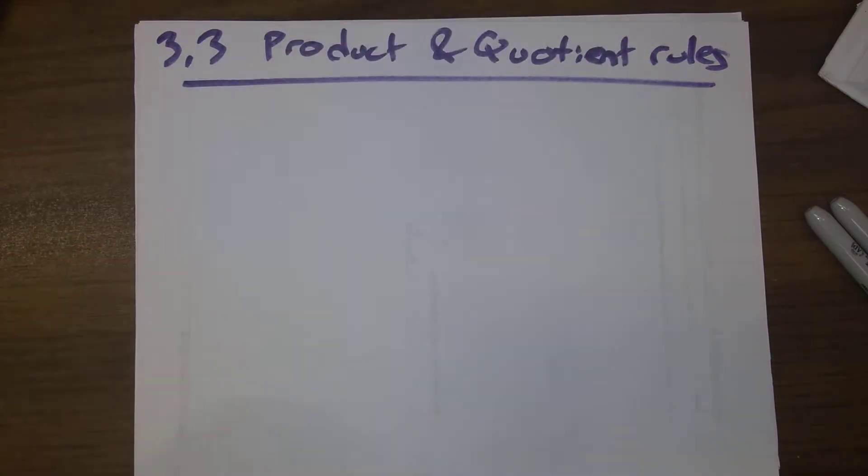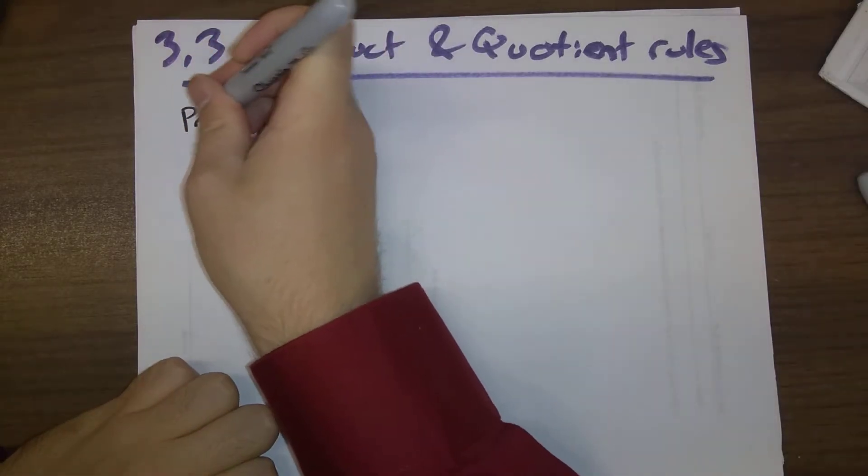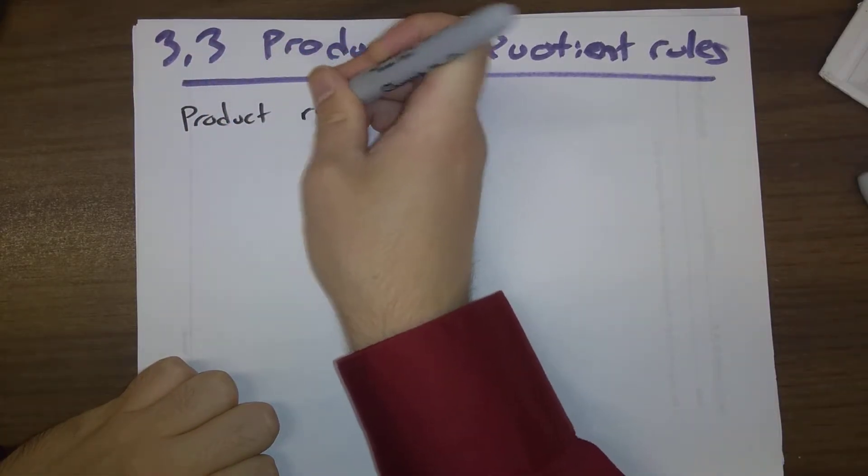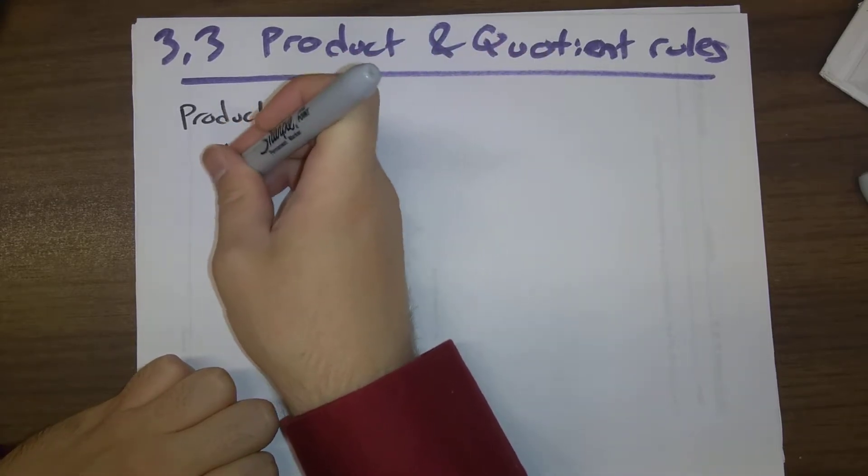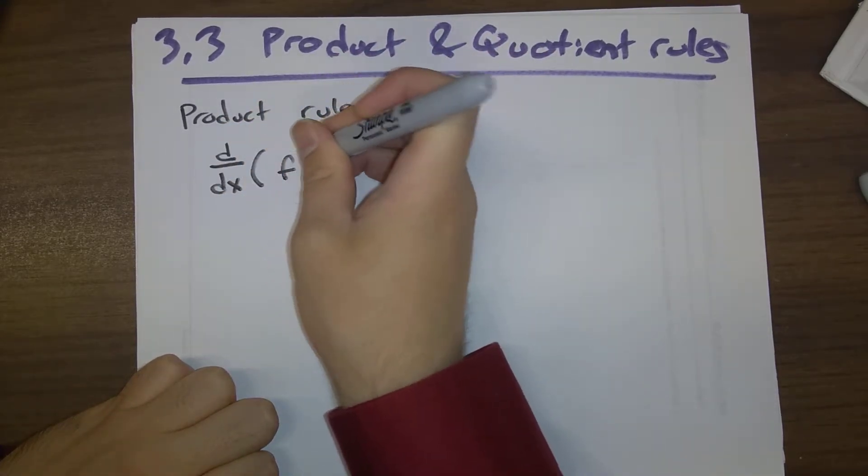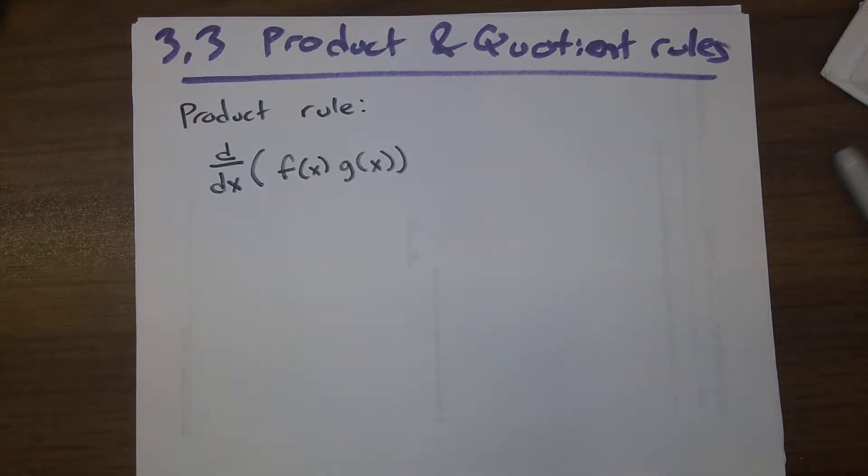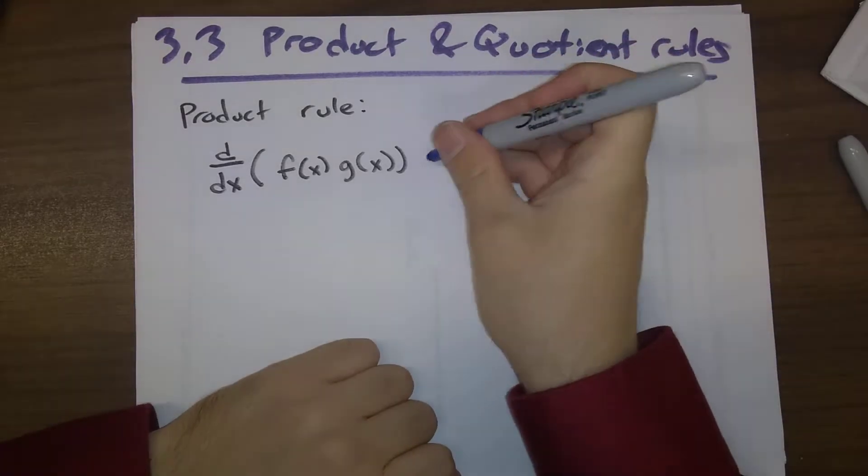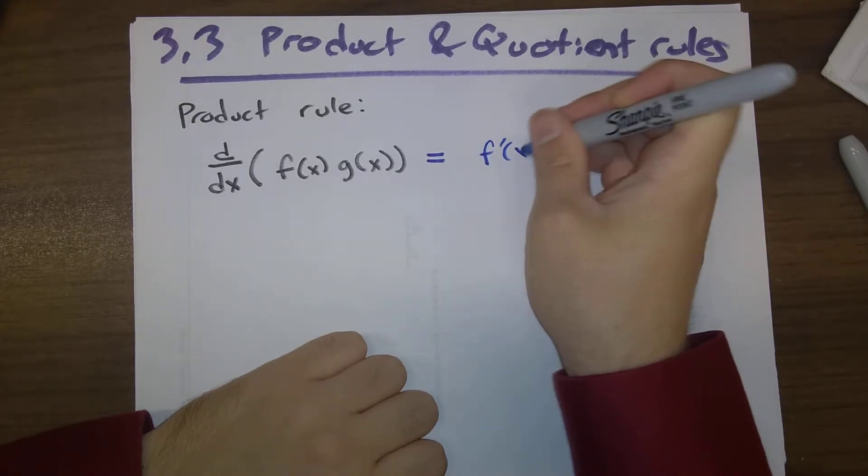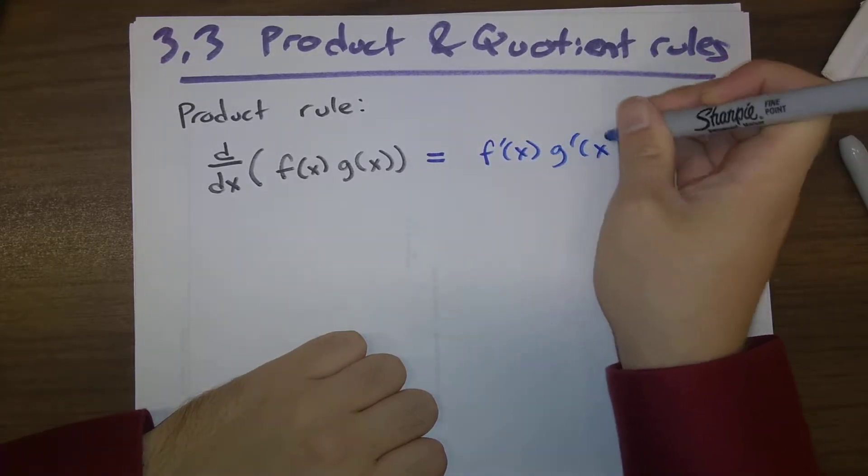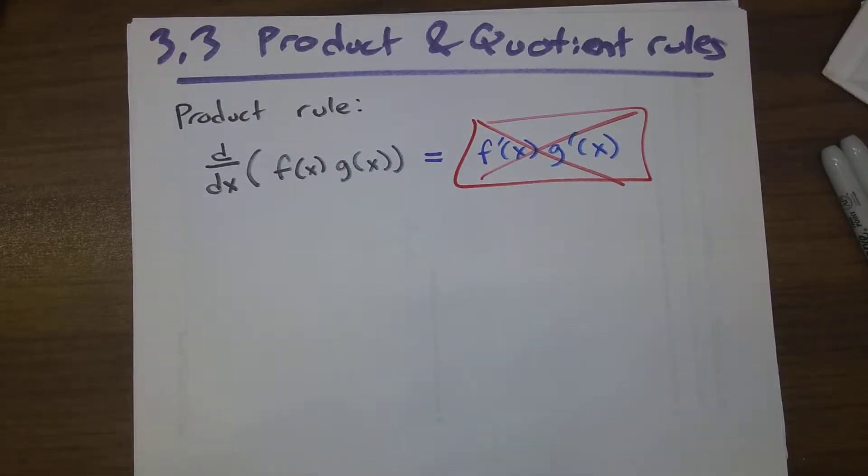You might expect that the derivative... First we're going to talk about the product rule. Suppose that we have to take the derivative of a product of two functions. The most natural thing to say is that the derivative of the product is the product of the derivatives. And this turns out to be not true at all.